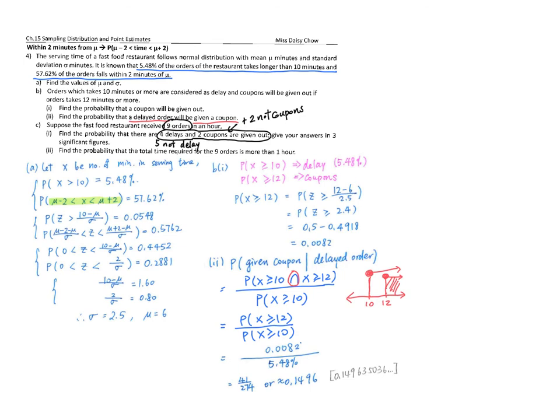4 orders are delayed, meaning 5 are not delayed. Among the 4 delayed orders, 2 get coupons, meaning 2 don't get coupons. Let's organize this: 2 have coupons, meaning 2 are greater than or equal to 12.